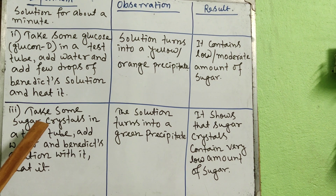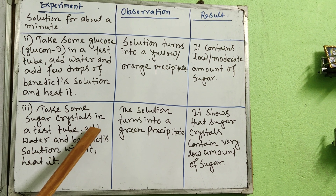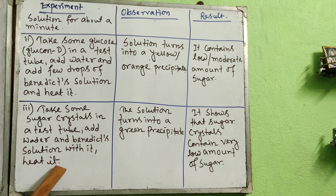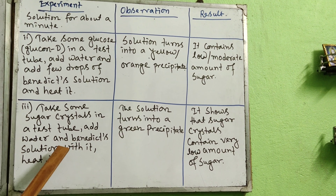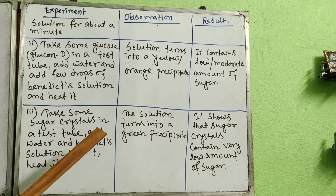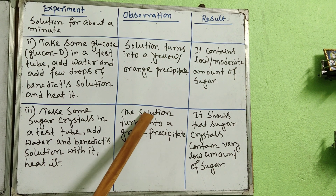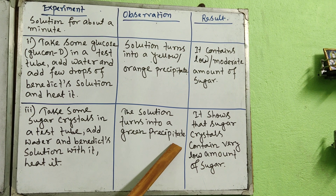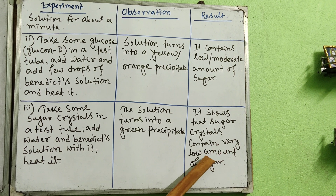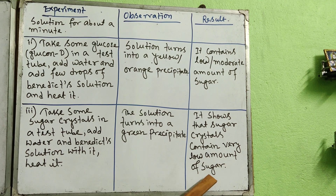Third experiment: Take some sugar crystals in a test tube, add water, then add Benedict solution, and heat the solution. After heating, check the color. If the solution turns into a green precipitate, it shows that sugar crystals contain a very low amount of sugar — not just low, but very low. A green color result means very low sugar content.